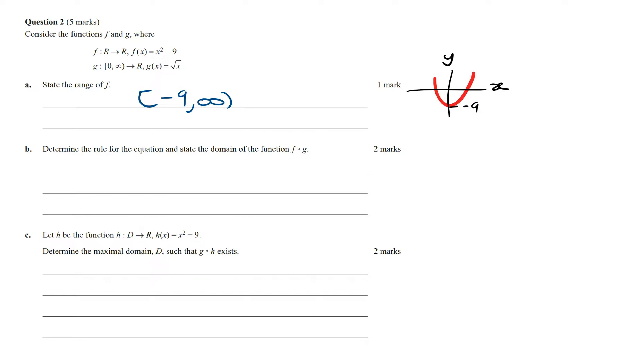Determine the rule for the equation and state the domain of the function f of g of x. f of g of x is going to be f of the square root of x, and so this is going to be the square root of x all squared minus 9, which is going to equal x minus 9.